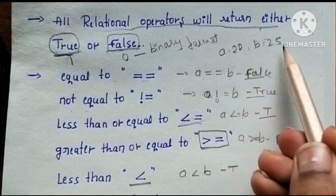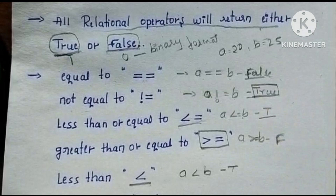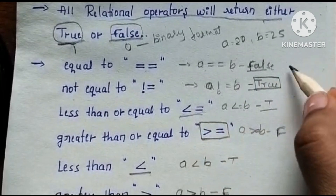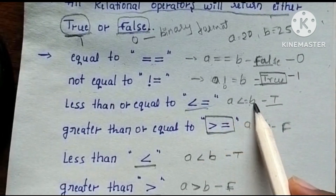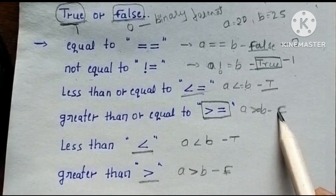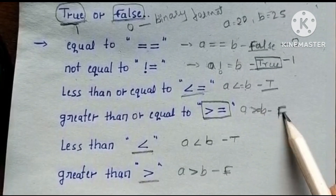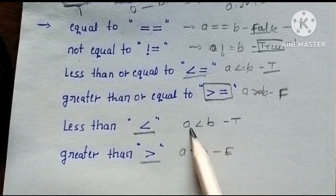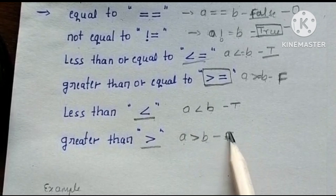20 is not equal to 25, so this is true. Then a less than or equal to b is true. A greater than or equal to b is false. 20 less than 25 is true. 20 greater than 25 is false.